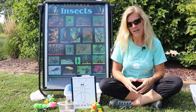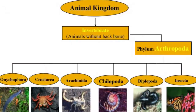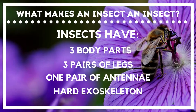Insects are part of the animal kingdom. They are arthropods, so that is their phylum, and they are in the class Insecta. There are certain characteristics that all insects have.